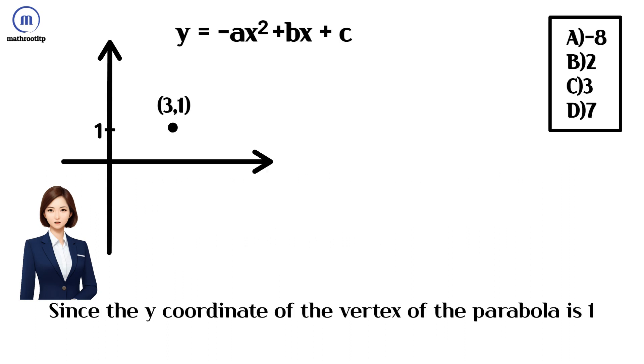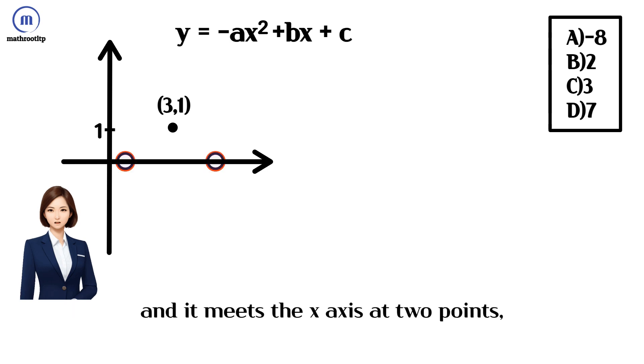Since the y-coordinate of the vertex of the parabola is 1, and it meets the x-axis at two points, the parabola opens downward.